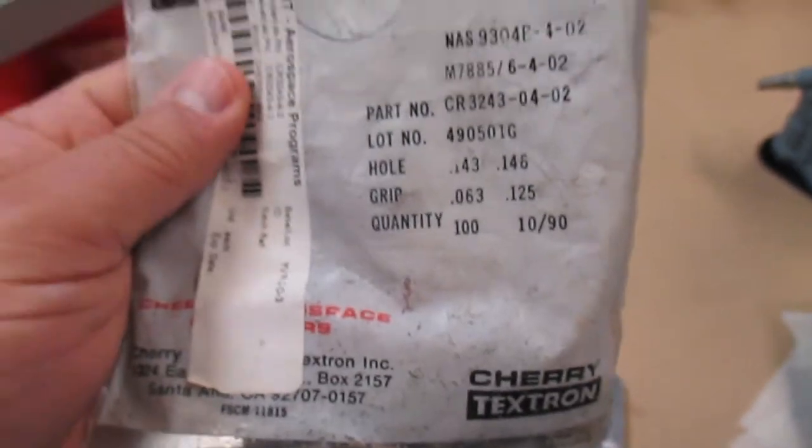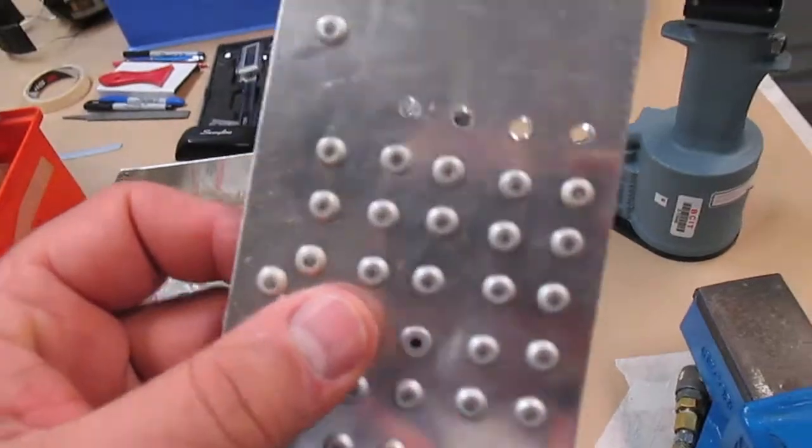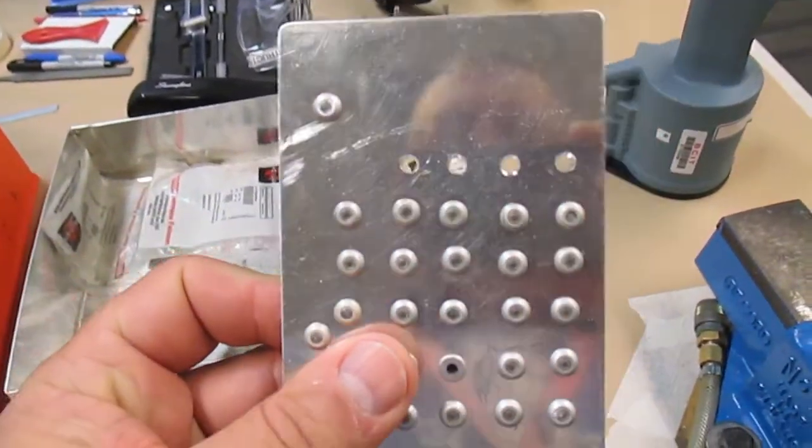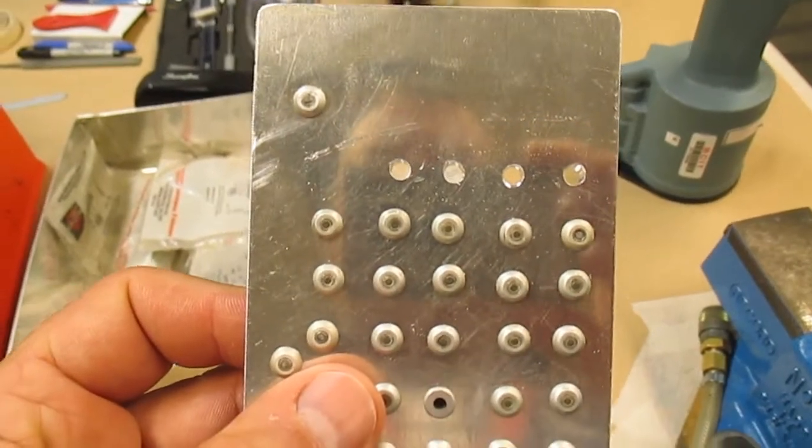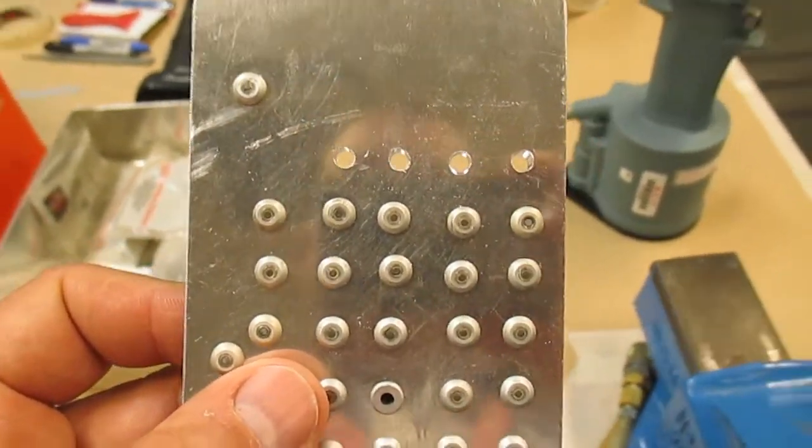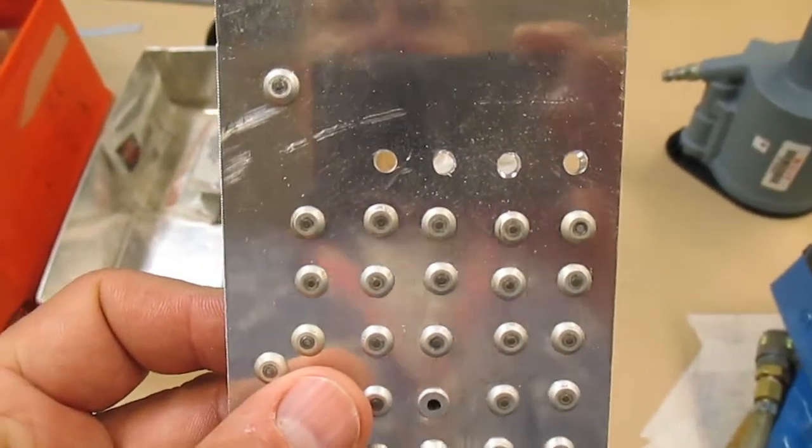Here's my rivets, my oversized rivets in a Cherry Max bag. And here's my piece of metal. You can see we've put a few in and we're going to put some more in.